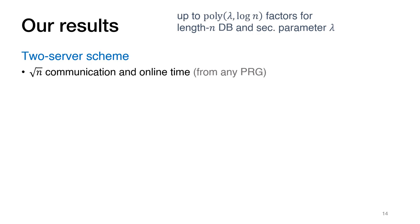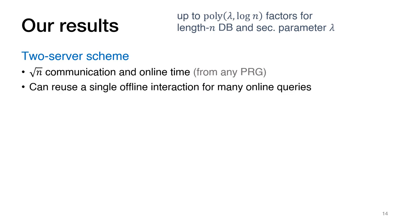So now we can state our results in more detail. Our first result is a two-server offline-online PIR scheme with square root n communication and square root n online time. Throughout this talk, I will avoid explicitly writing factors that are polynomial in the security parameter lambda and polylogarithmic in the database size n, so square root of n really means O-tilde of square root n times some polynomial in lambda. This construction uses only basic symmetric key primitives, so it is concretely efficient. The construction also has the extra property of allowing multiple online queries without having to redo the offline phase from scratch each time, meaning the linear cost of the offline phase can be further amortized across multiple queries.